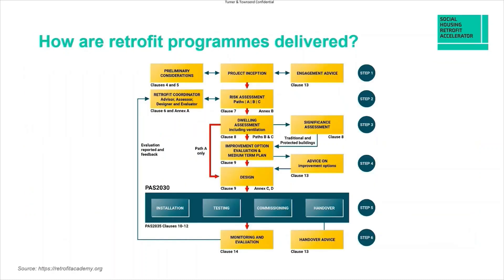So what are the key stages for retrofit delivery? On screen is the PAS 2035 framework for delivery, and this must be followed for a retrofit project to achieve compliance. A detailed delivery plan will help ensure that a retrofit project is delivered smoothly and successfully, helping control timescales and budget and managing expectations with internal and external stakeholders. There are other processes that will need to be considered in-house before engaging with the PAS process, such as reviewing housing stock and other asset data. The first of the six key steps of the PAS 2035 retrofit process is identifying intended outcomes and key project objectives at the outset.